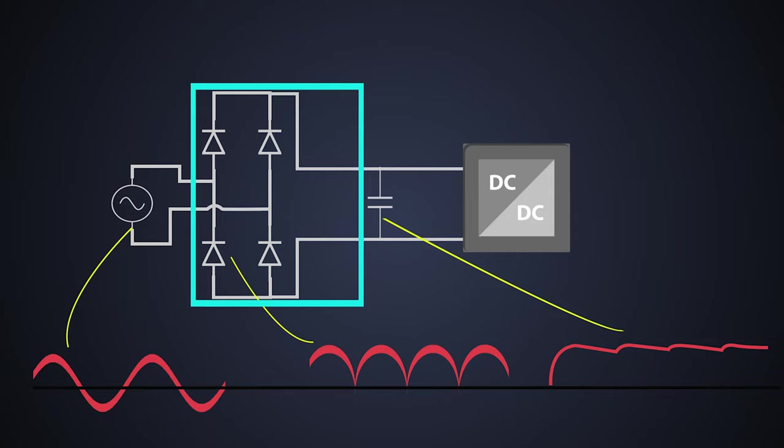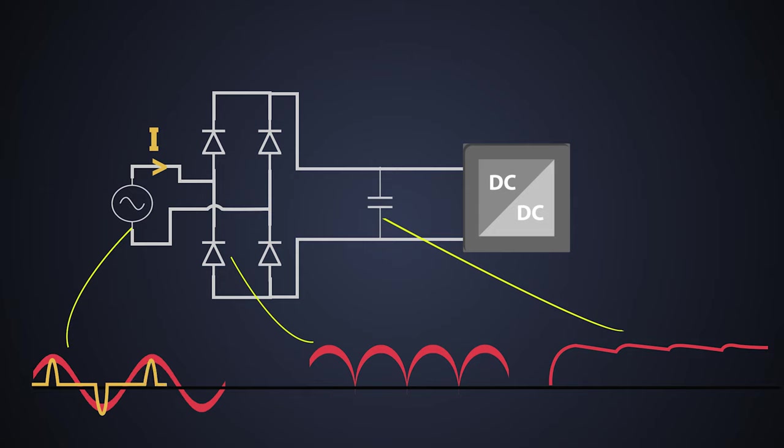So far we have seen how the voltage behaves and we get the DC output, but if we check the current at the input, it goes like this. The voltage is sinusoidal but the current is full of distortions. And this happens because of this capacitor. This capacitor charges quickly at the peak of the input voltage and discharges slowly. So the current flowing through the circuit is not linear. And there are multiple harmonics present in this current waveform.